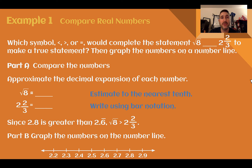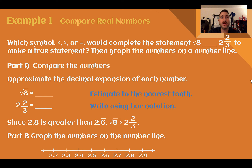Example 1: Compare real numbers. Which symbol — less than, greater than, or equals — would complete the statement: square root of 8, something, 2 and 2 thirds, to make a true statement? Then graph the numbers on a number line. So first, Part A, let's compare the numbers. We're going to do this by approximating their decimal.